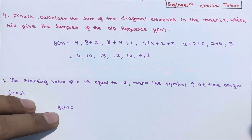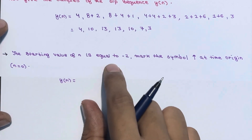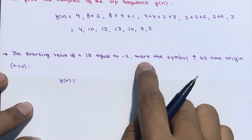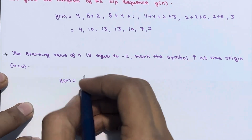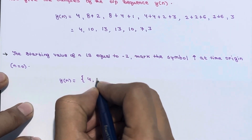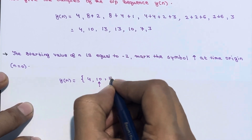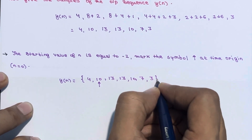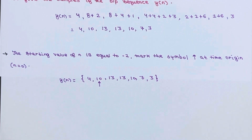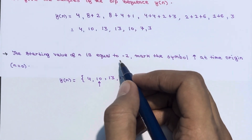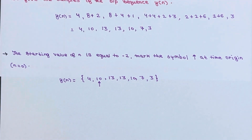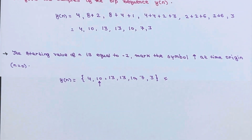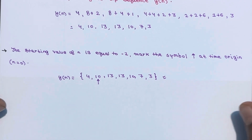The starting value is at n = −1, so mark the arrow at the time origin n = 0. The result can be represented as y(n) = {4, 10, →13, 13, 10, 7, 3}. You can refer to the previous lectures to see how to calculate the starting point. This is linear convolution using the matrix method.